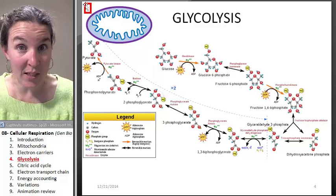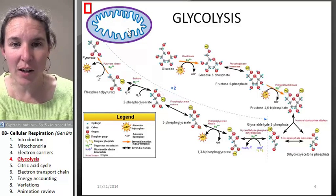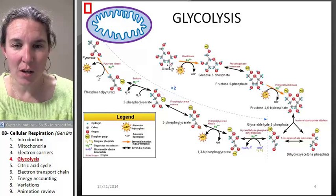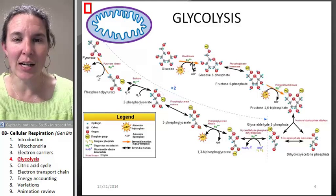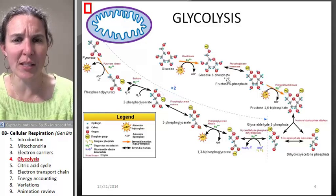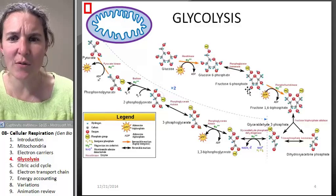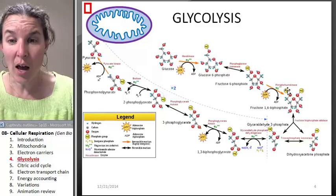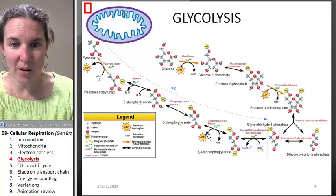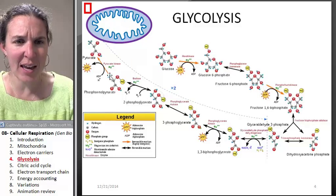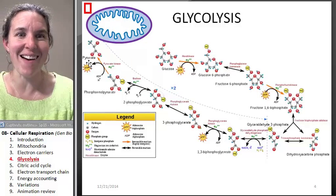We start out with glucose. Hexokinase turns it into glucose-6-phosphate, which phosphoglucose isomerase turns into fructose-6-phosphate. How many steps are there in this whole process? And then we end up with pyruvate.